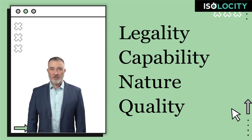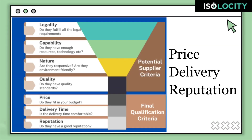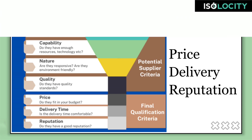Now you will have to use the last three filters to finalize your supplier: 1. Price — how competitive their cost is, does it fit in your budget, and is it value for money? 2. Delivery time — it can be crucial for some companies, so you would want to get clarity on this and make sure it is aligned with your objectives. 3. Reputation — you would want to hire a supplier who has a good reputation in the market.